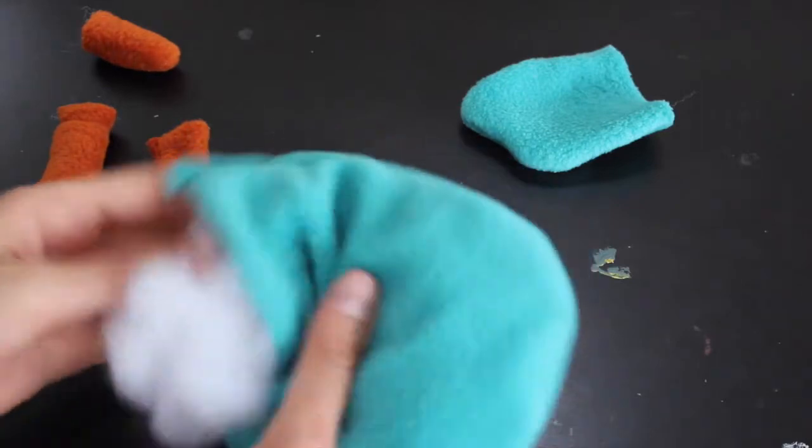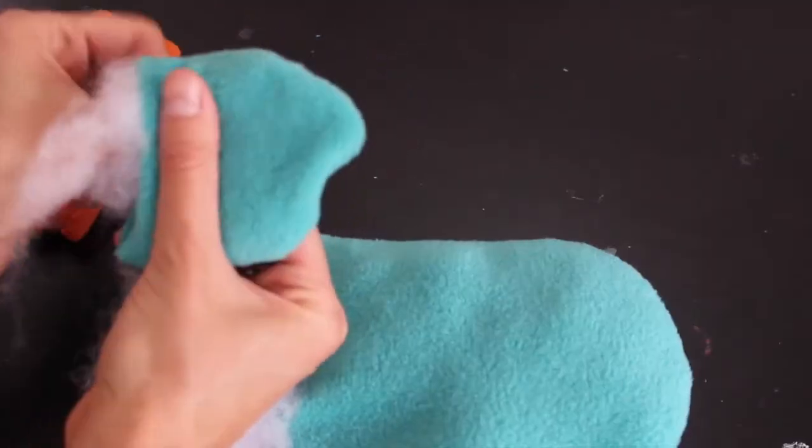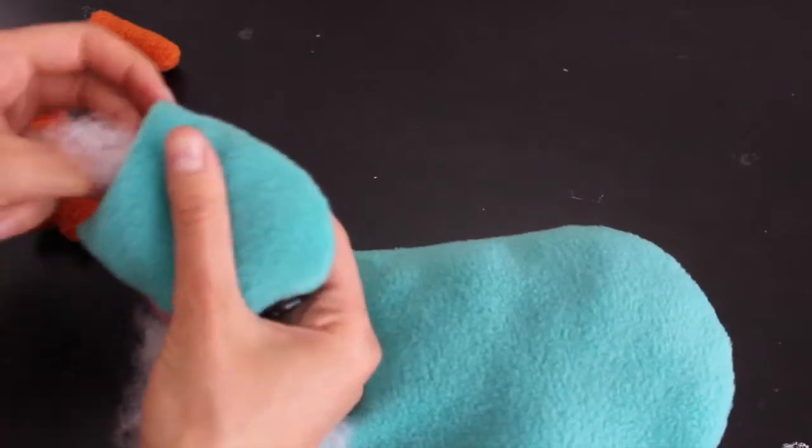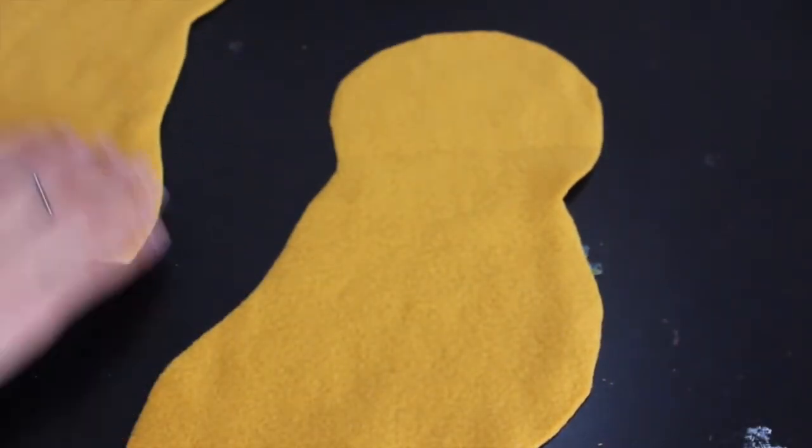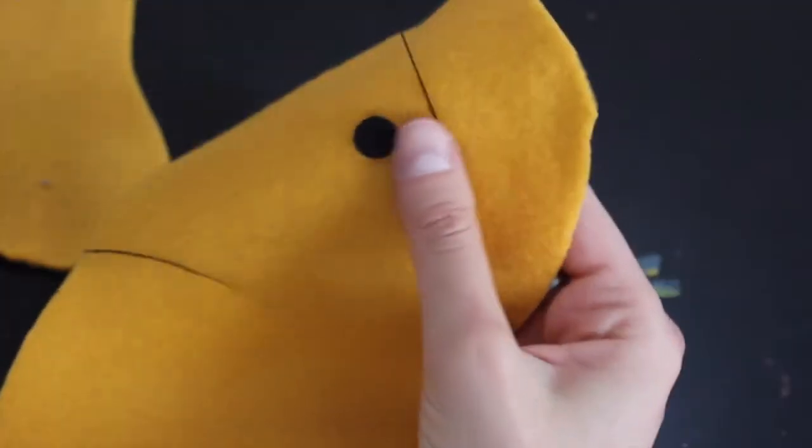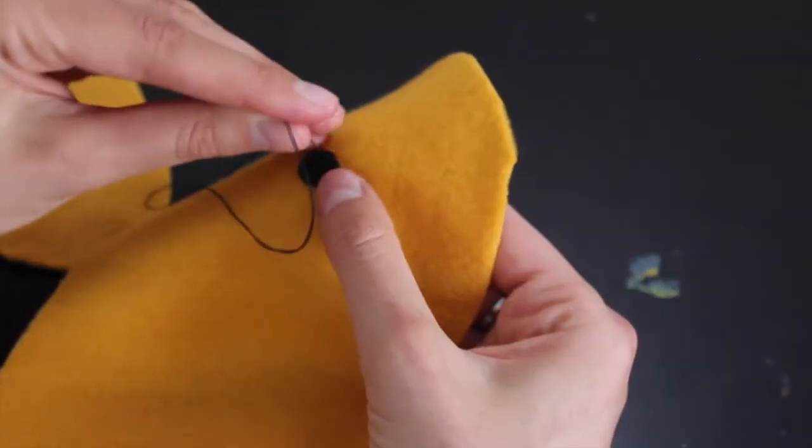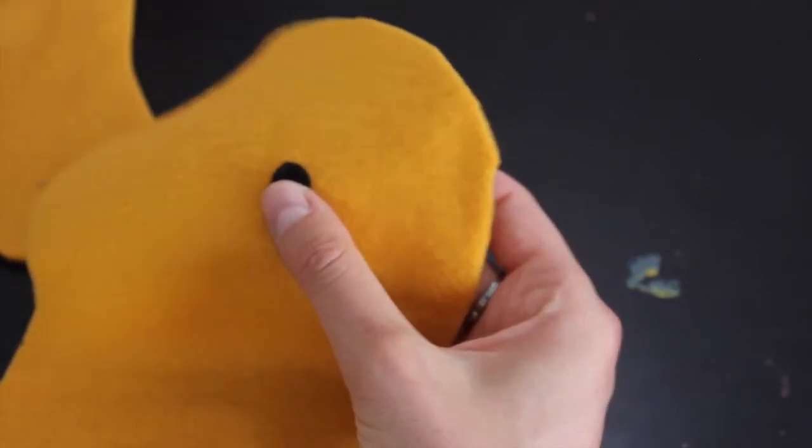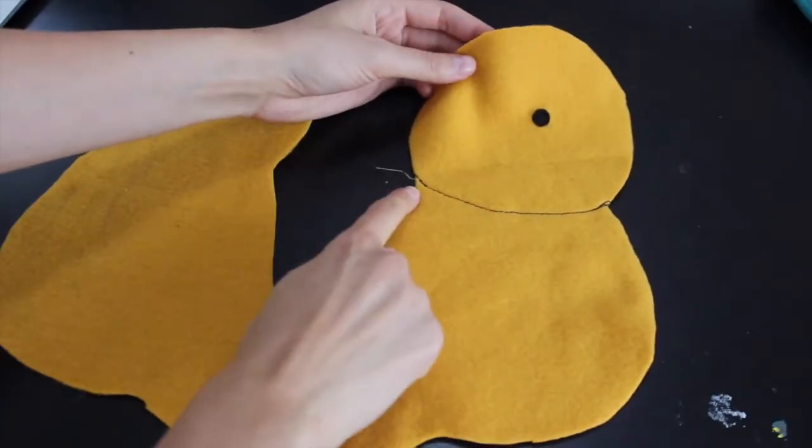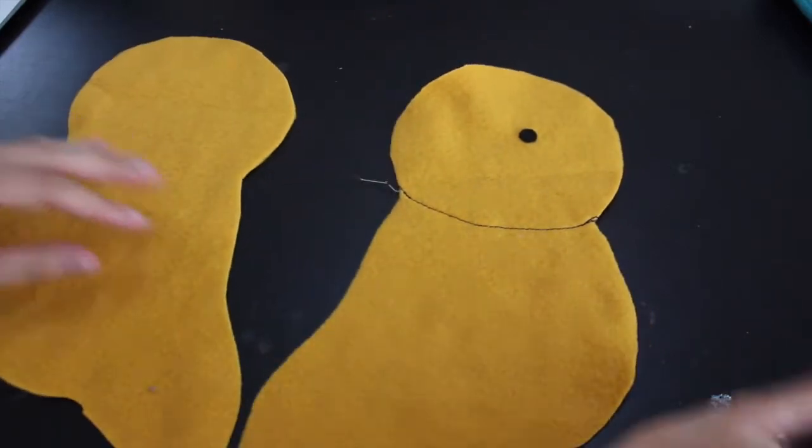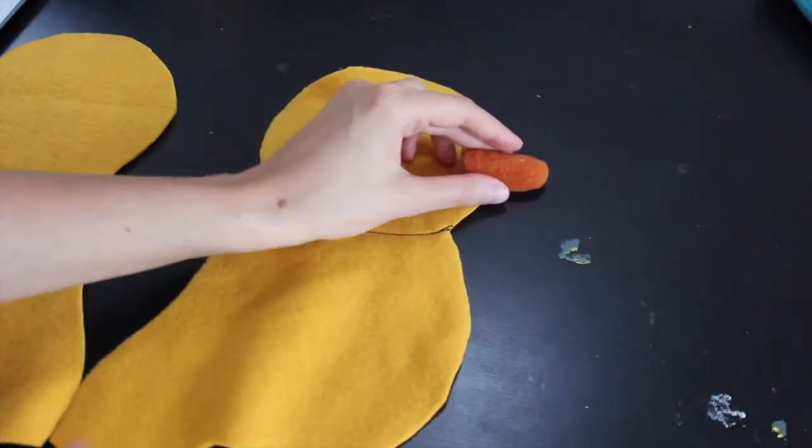And then you're going to go ahead with that little eye that you cut from felt and just sew that up with a needle and thread like I'm doing here, and I also sewed a black line along the neckline just like in the drawing.